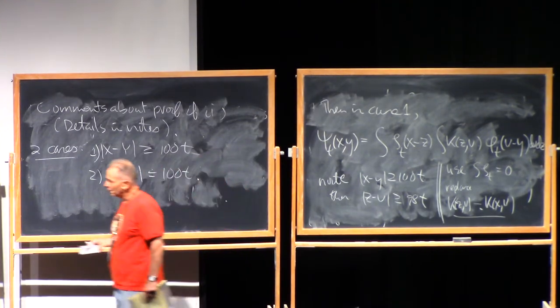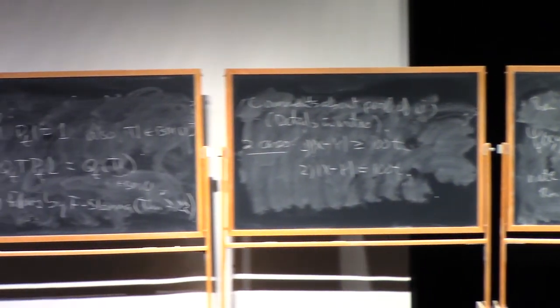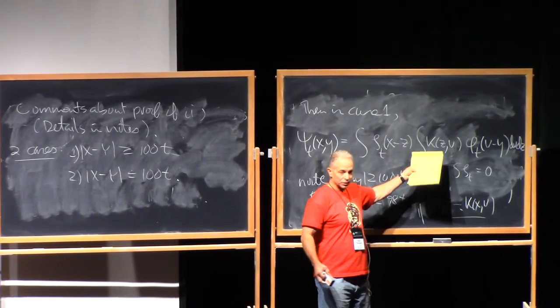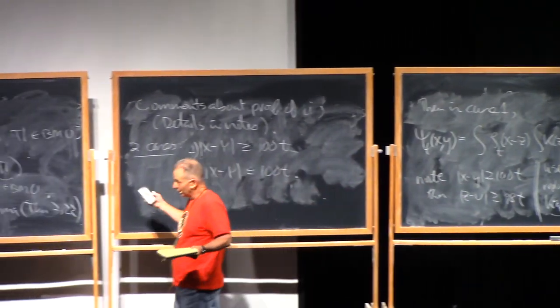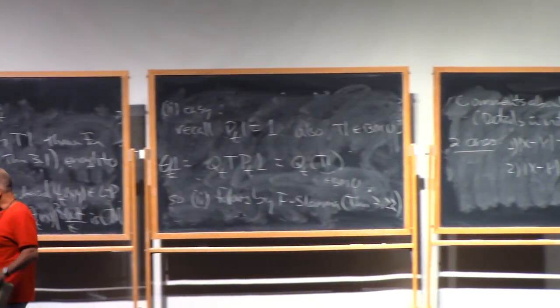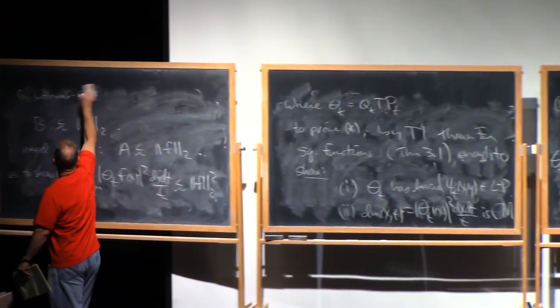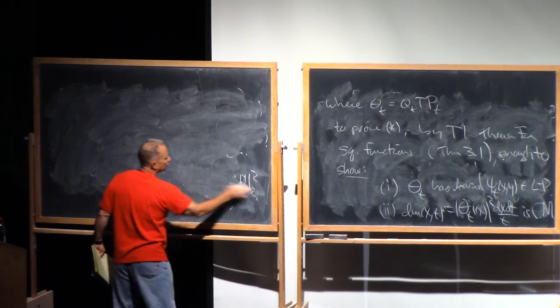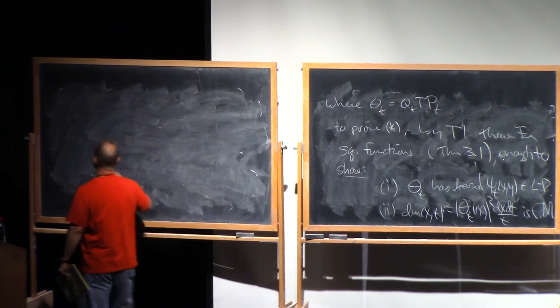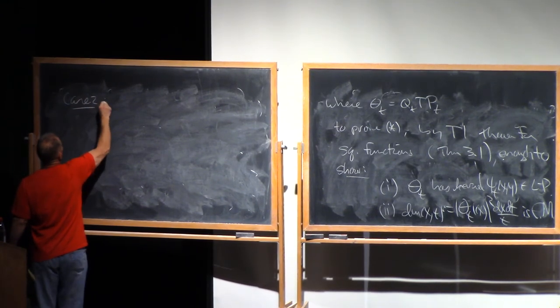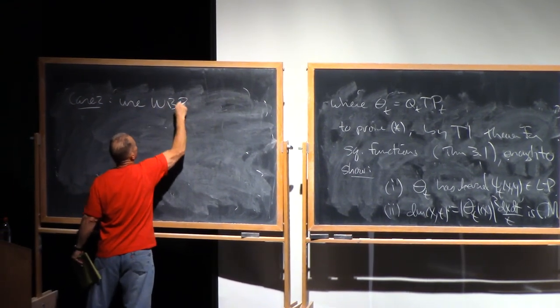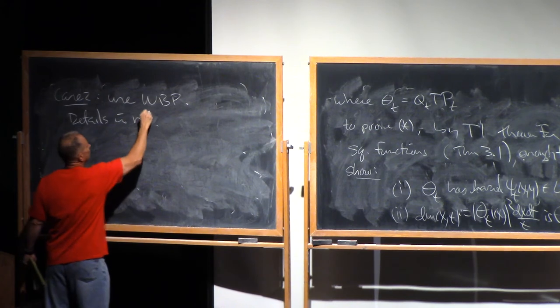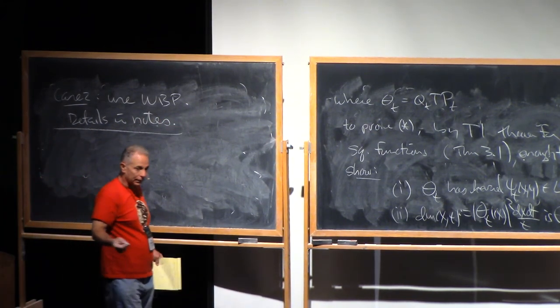For case two, the idea is somehow to use the weak boundedness property. In case two, you don't get to write this out as an absolutely convergent integral, because you don't have separation. You're not away from the diagonal there. So I'll just say briefly, then in case two, use weak boundedness. And again, the details here are in the notes. And that's the proof of the theorem.